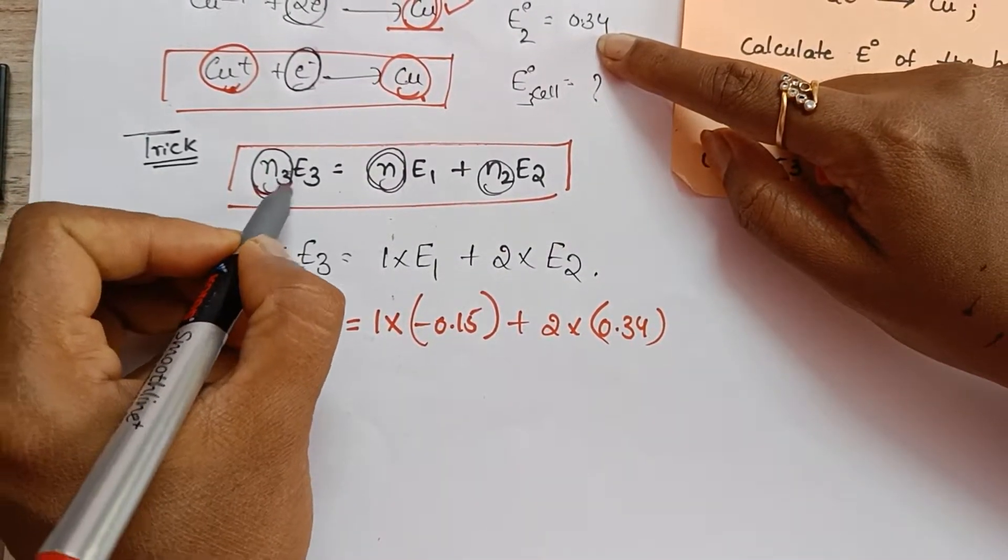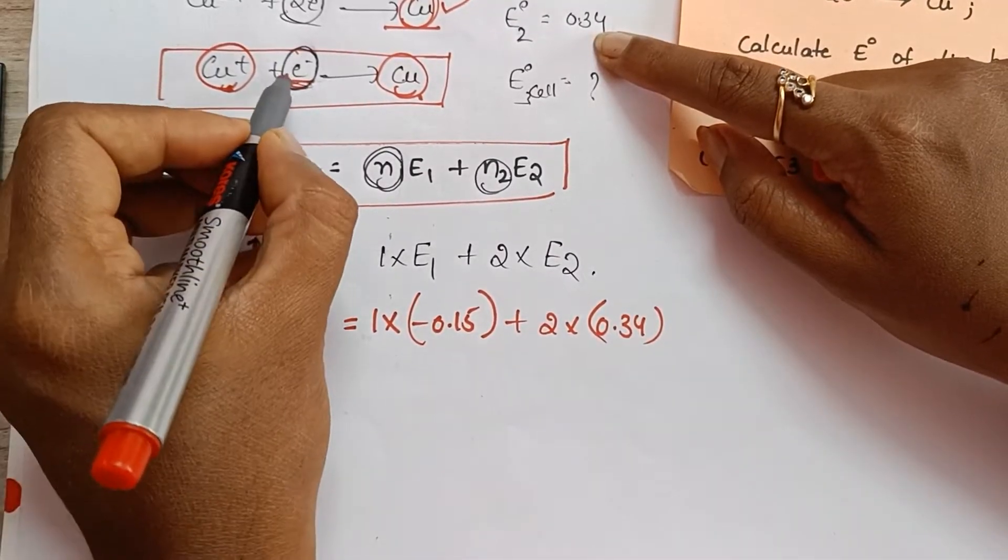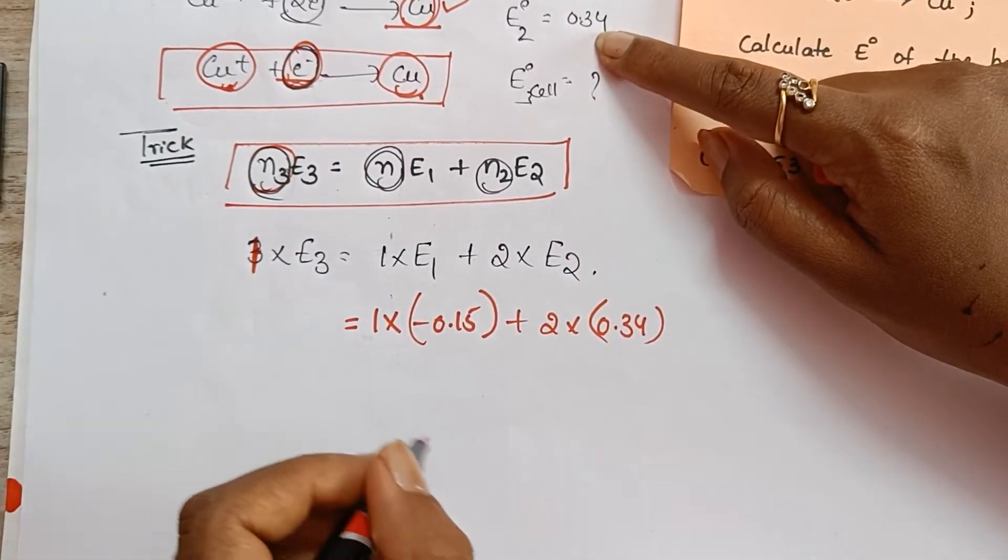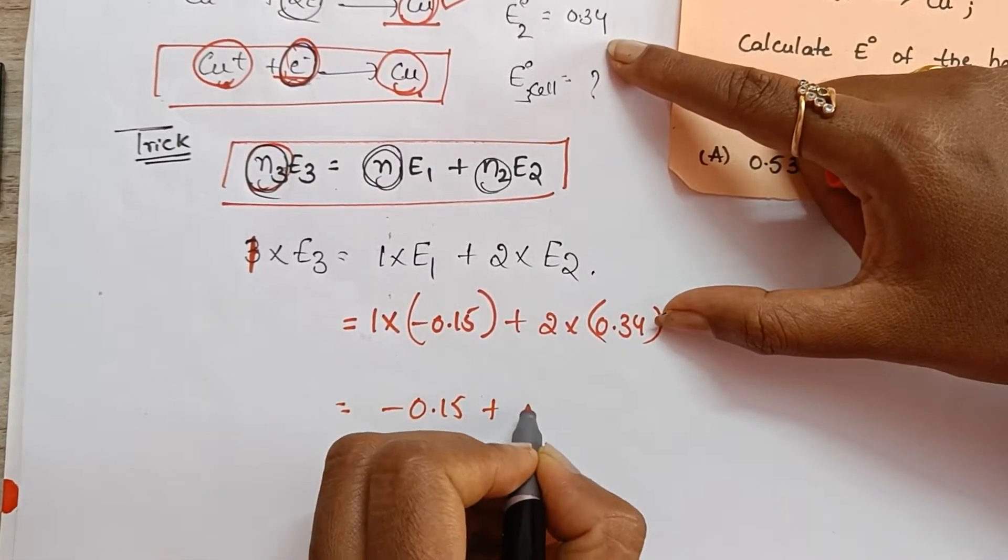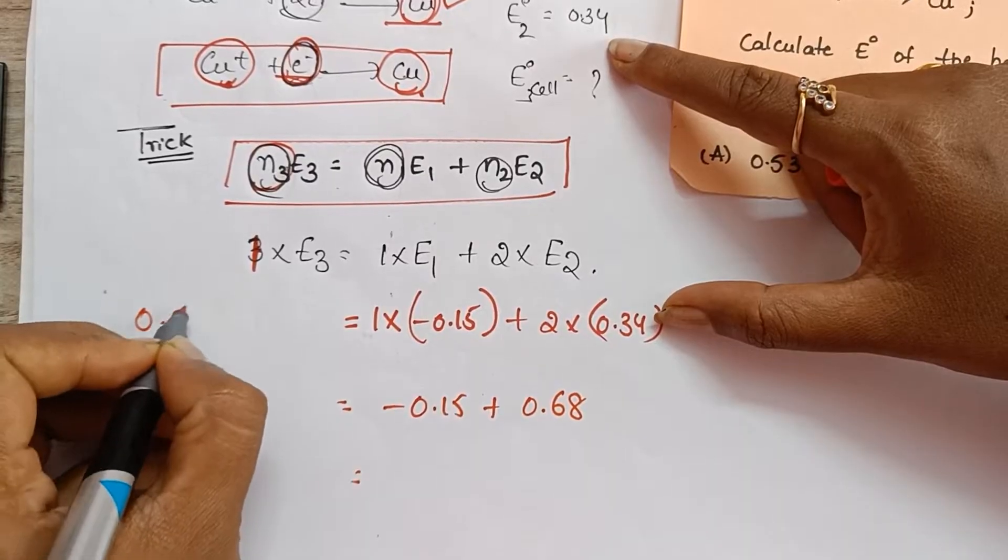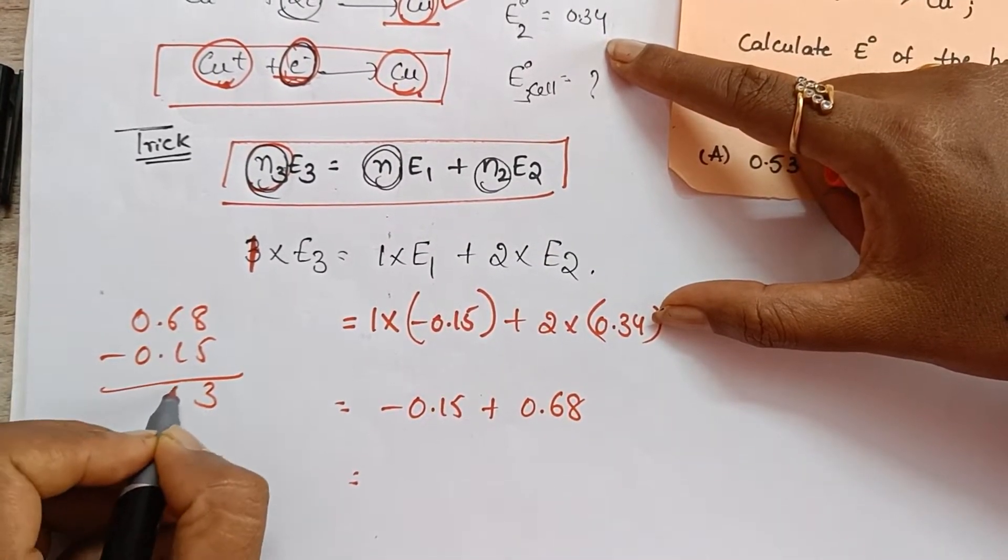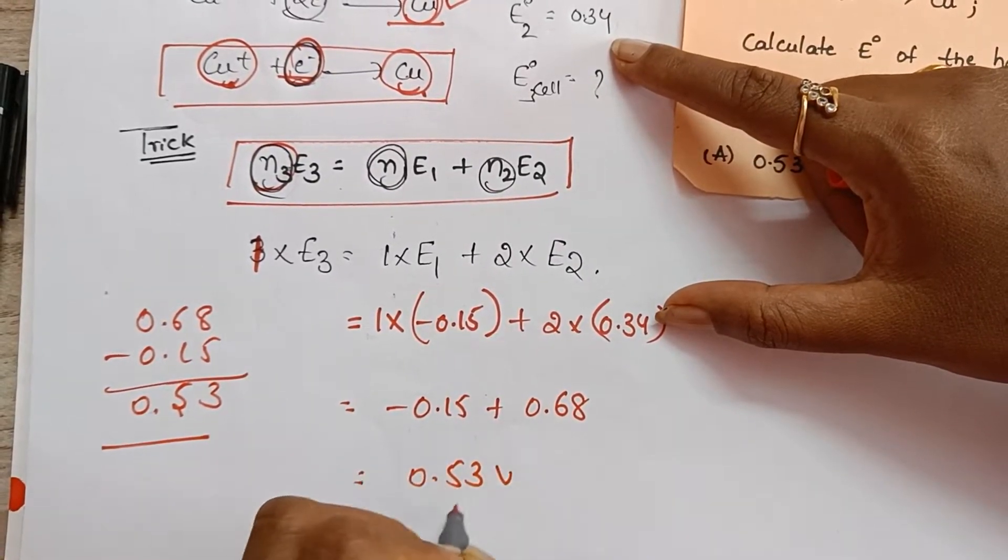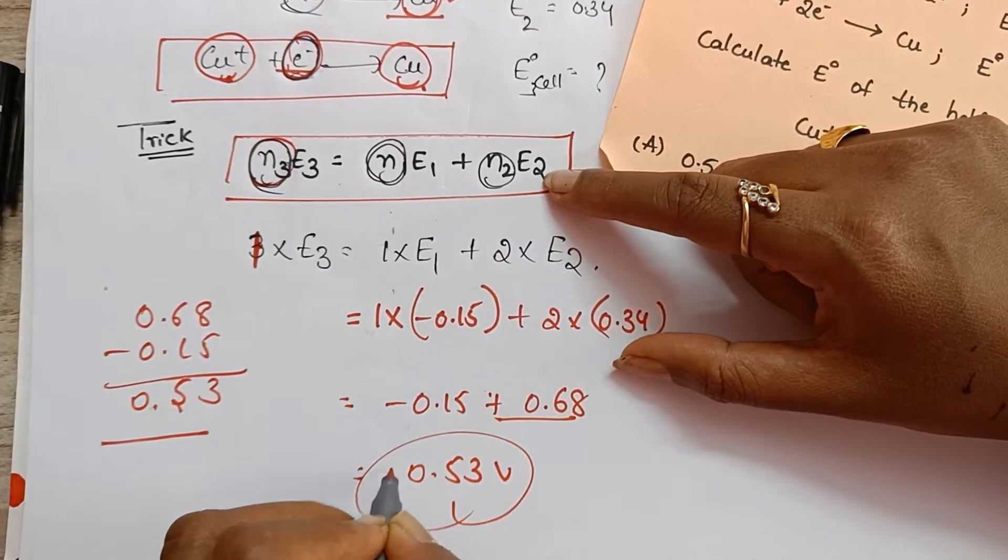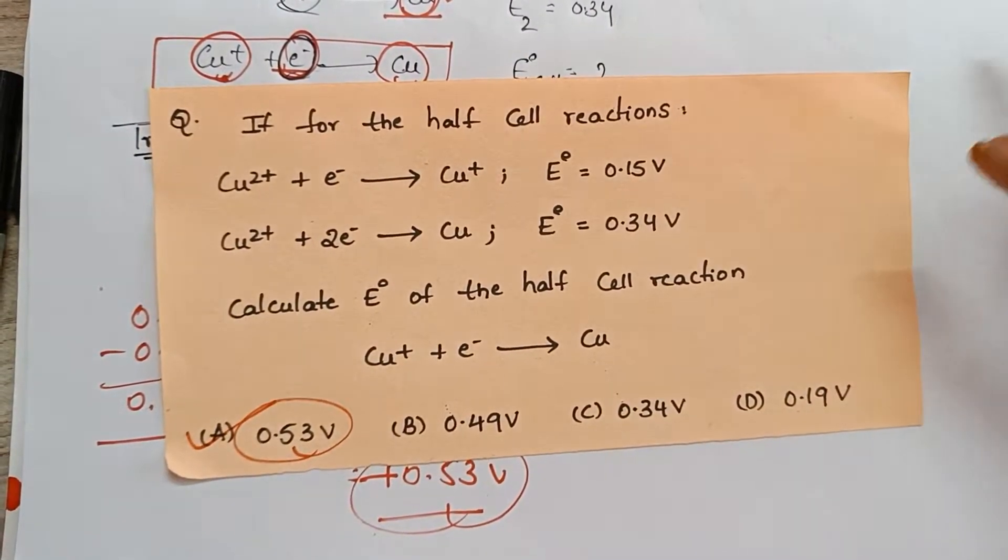Number of electrons transferred here is 1. I substituted by mistake 3. Here number of electrons transferred is 1. Then minus 0.15 plus 2 into 0.34 is 0.68. How much? 1, 5 is 3 and 5, 0.53. 0.53 is your answer. Bigger number positive value. Option A is the correct answer.